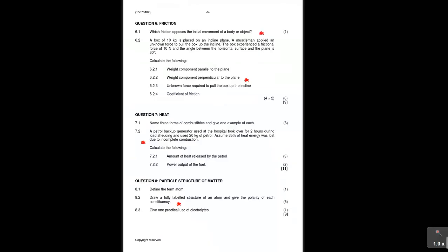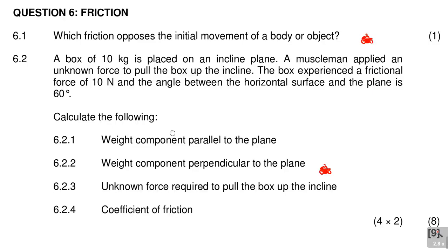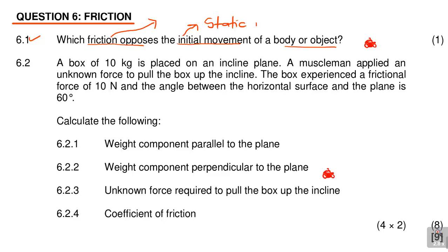Let us look at question 6.1 — it asks which friction opposes the initial movement of a body or object. There are two types of friction. Before a body moves, we say it has static friction. Once the body is already in motion, the friction is called kinetic friction. So static friction opposes initial movement; kinetic friction opposes a body that is already moving.